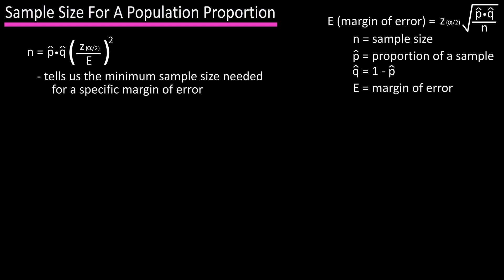Two quick notes. If a value of p hat is known, say from a previous study, that value can be used. If no approximation of p hat is known, you should use p hat equal to 0.5, as this gives the largest possible value for p hat times q hat, which gives the largest possible value for n.